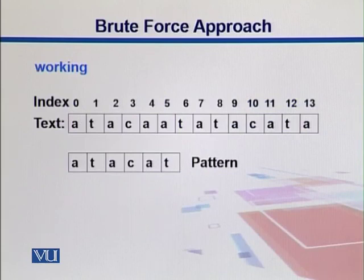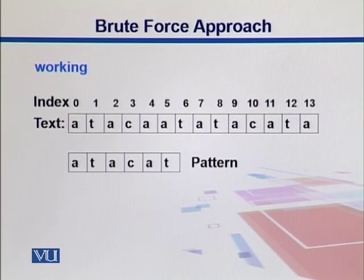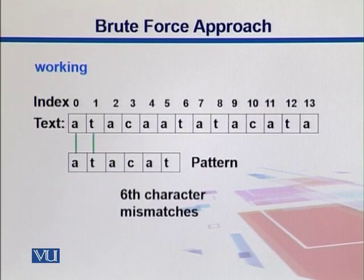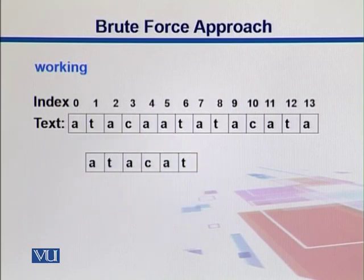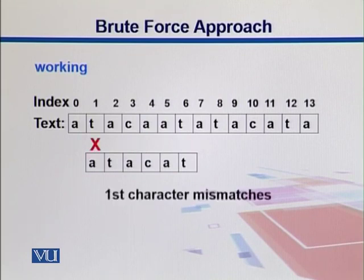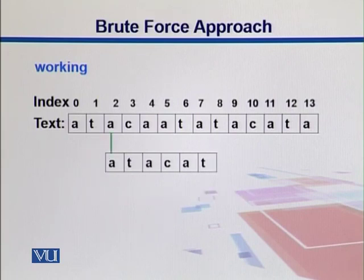Let's elaborate with an example. We have a text of length 14 and a pattern of length 6. We start by aligning the first nucleotide of the pattern with the first nucleotide of the text. We see that every character matches except the 6th, which mismatches, so we move one character to the right. The first character then mismatches, so we move further. Eventually the first character of the pattern matches the third character of the text, which is index number 2 since our loop starts at 0.